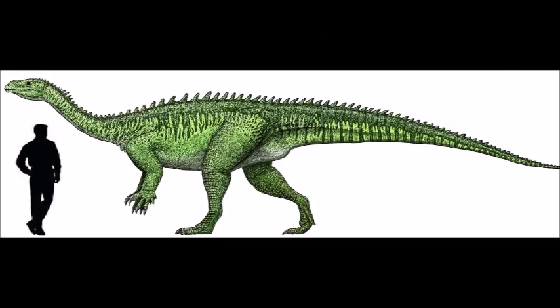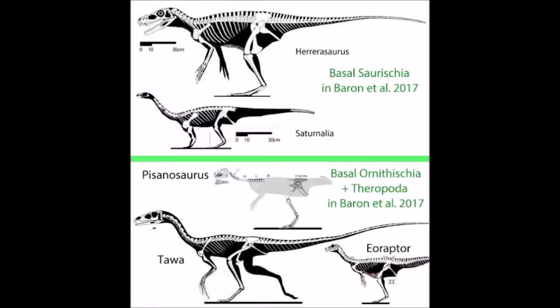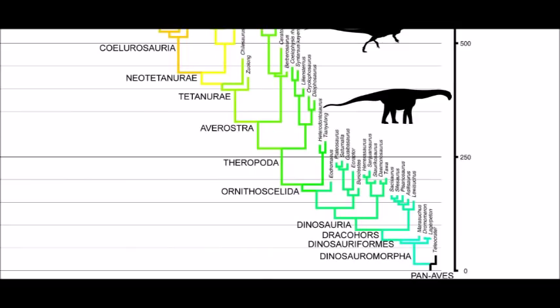It might seem odd to consider bipedal dinosaurs as close relatives of quadrupedal sauropods, but we already knew that bipedality was the ancestral condition, as it is seen with the sauropodomorph Plateosaurus. Although the exact position of some of these early dinosaurs is still hotly debated among researchers. Herrerasaurus in particular exhibits a mixture of ancestral and derived traits, and was previously considered to be a basal theropod or basal saurischian. In a recent study, Andrea Cau considers Herrerasaurus as basal to all other dinosaurs, and also says that the basal ornithischian Pisanosaurus is not a true dinosaur, but a silesaurid.